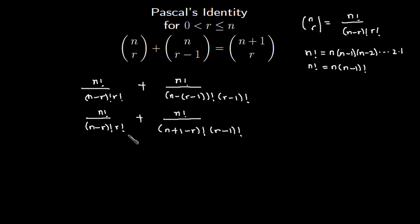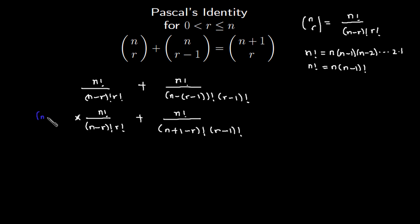You will see that r factorial is bigger than r minus one factorial, and n plus one minus r factorial is bigger than n minus r factorial. To get a common denominator, we multiply the numerator of the first term by n plus one minus r, and the numerator of the second term by n plus one minus r as well.